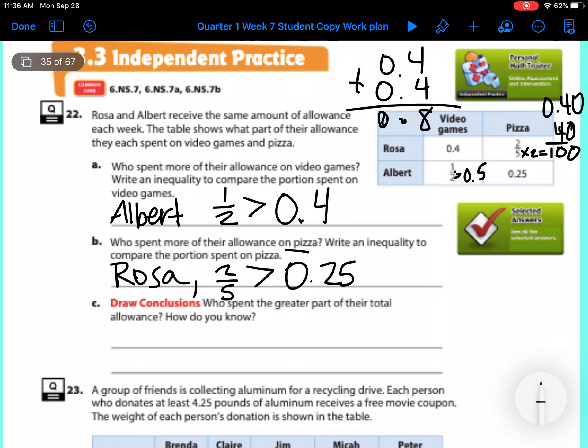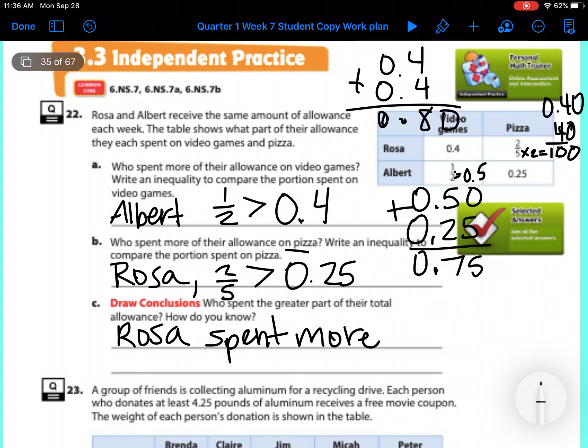For Albert we have 0.5 and 0.25. So how you do this is behind this 5 you add a 0. Then you add them together. 0 plus 5 is 5. 5 plus 2 is 7. Decimal is 0. So who spent greater? 0.80 or 0.75. Rosa. Rosa spent more. And then we're going to just write 0.80 is greater than 0.75. That is proof for how we know.